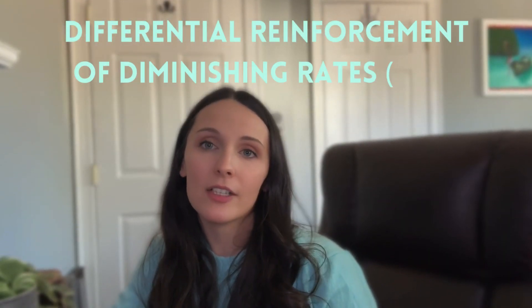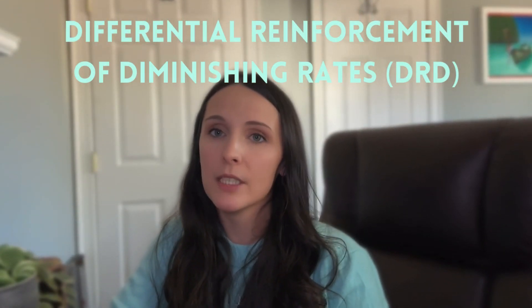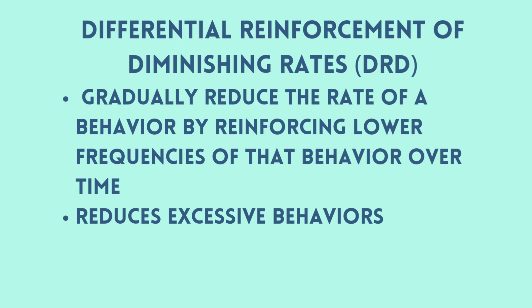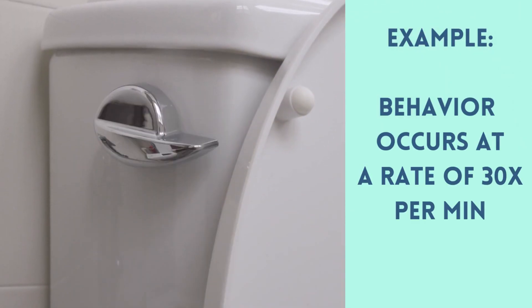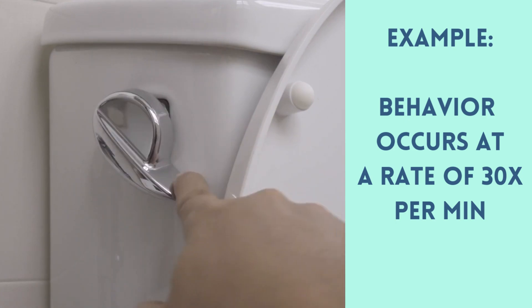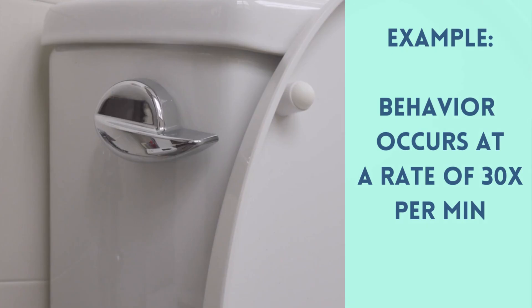Finally, we have DRD, which stands for Differential Reinforcement of Diminishing Rates. DRD is used to gradually decrease the frequency of a behavior over time. It systematically reduces the behavior until it naturally fades out or reaches an appropriate level, and in some cases, eliminates it altogether. DRD ensures that the behavior fades naturally rather than stopping abruptly, which can cause frustration or other unintended consequences. For example, imagine a child that excessively flushes the toilet after they go to the bathroom — let's say 30 times in a row. DRD will reinforce under that criteria so that if they flush 28 times they'll be reinforced, and the criteria is gradually reduced from there.